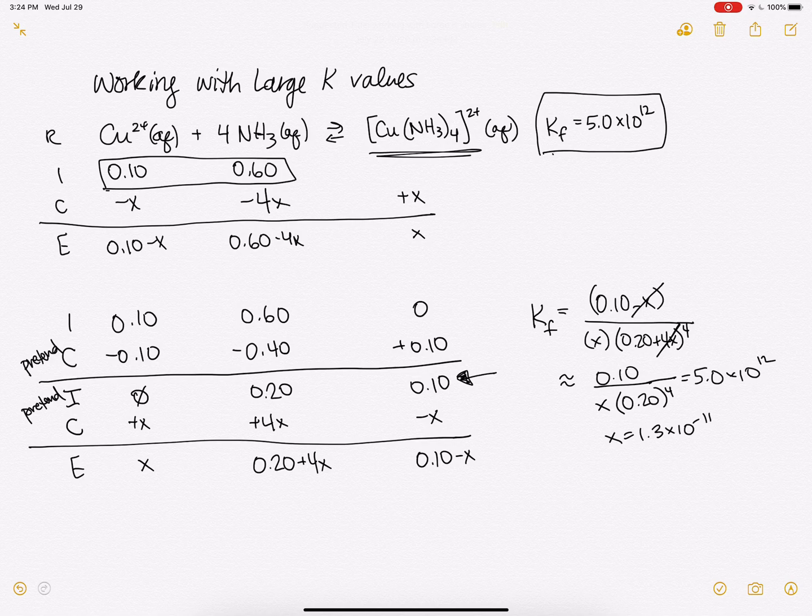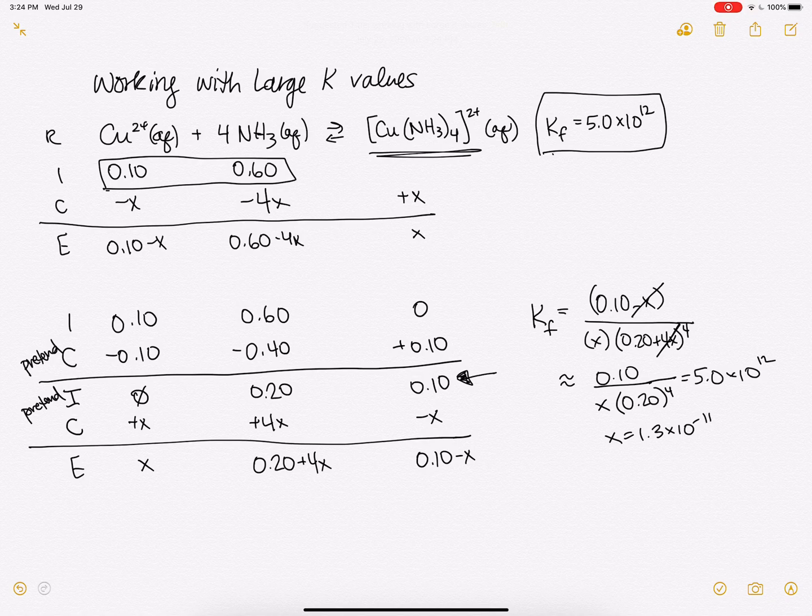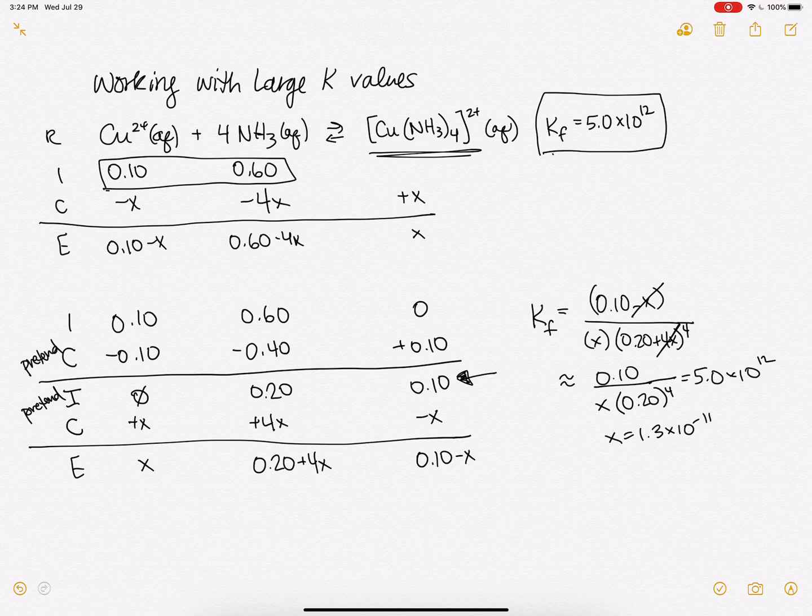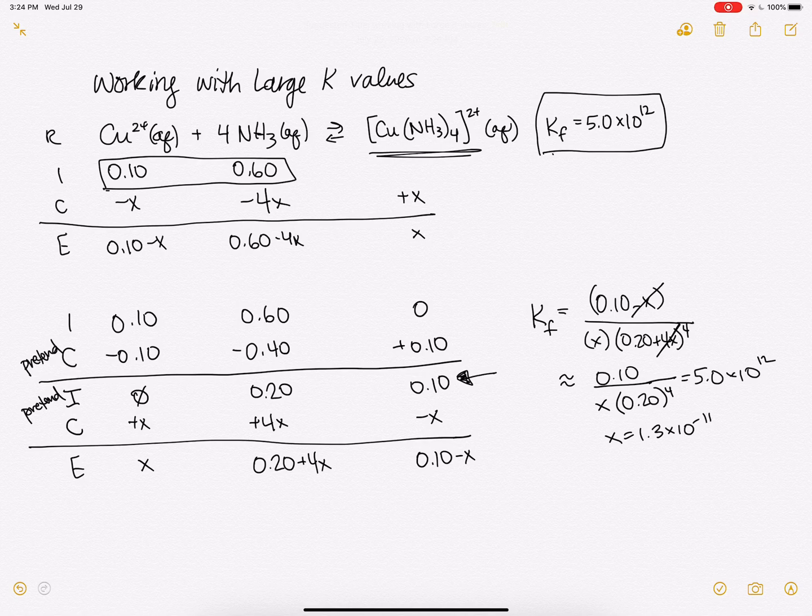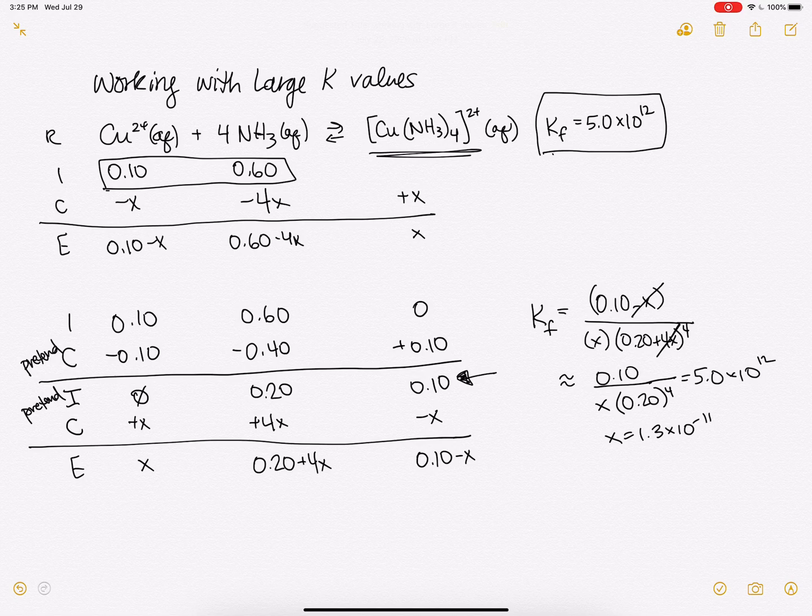And essentially, this is a way to deal with having large K values. We run into this especially with KF values, the formation of complex ions, because they tend to have very large KFs. So we make this sort of pretend initial condition where we react everything as far forward as it can go, just stoichiometrically. And then we can use our small X approximation in order to make our lives easier and not have to worry about dealing with X to the fourth in your equation.